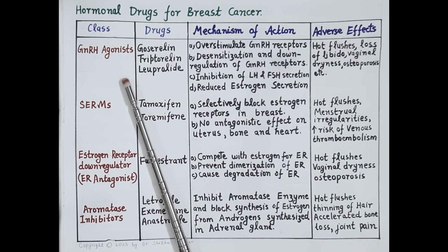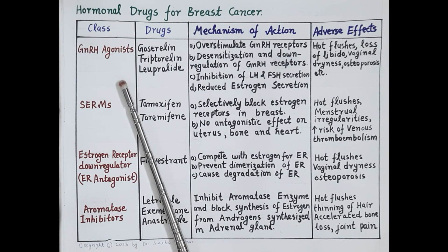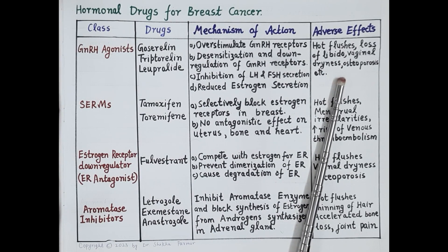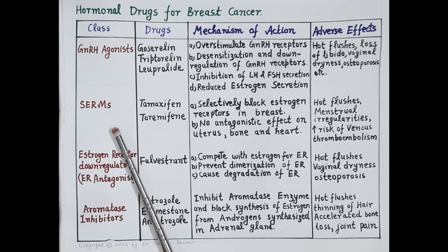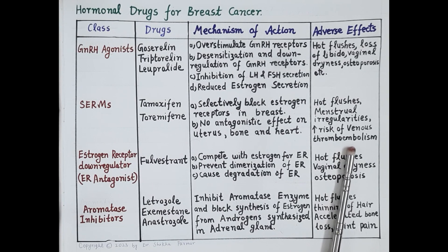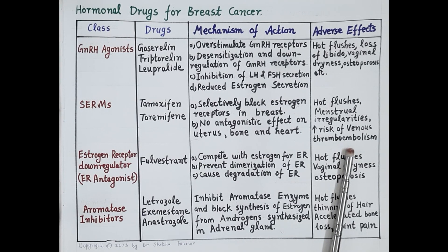GnRH agonists reduce secretion of estrogen, and reduced estrogen produces adverse effects like hot flushes, menstrual irregularities, and risk of osteoporosis. Selective estrogen receptor modulators can also produce hot flushes, menstrual irregularities, and an increased risk of venous thromboembolism. Importantly, since SERMs do not block estrogen receptors on bones and heart, they do not cause osteoporosis or cardiovascular diseases.